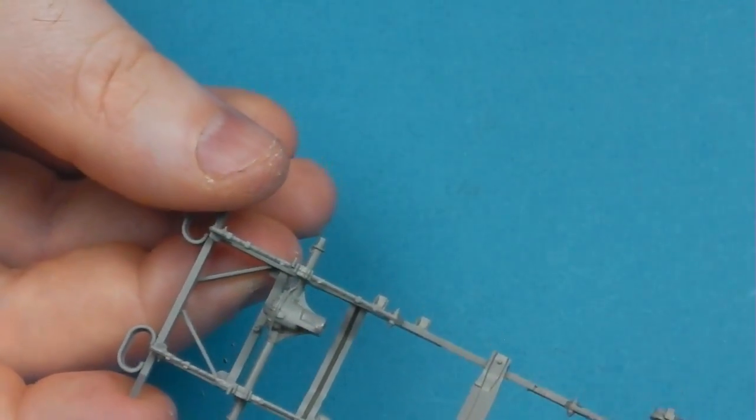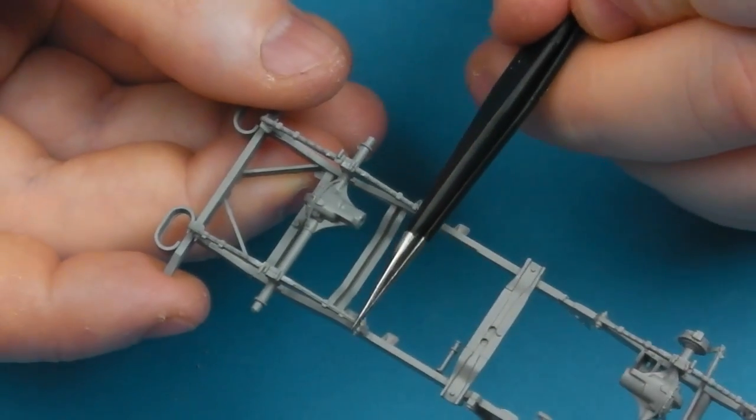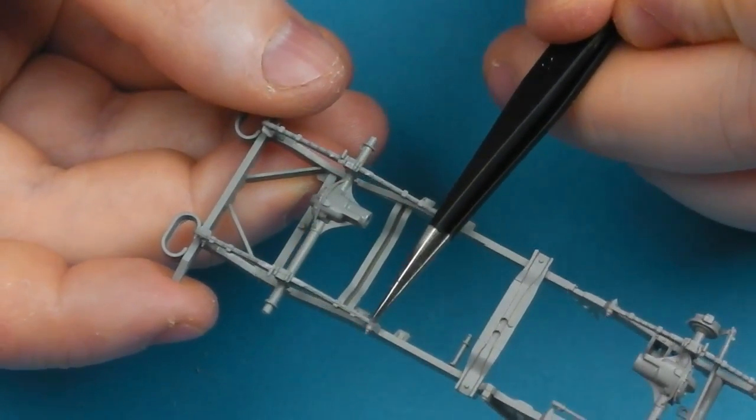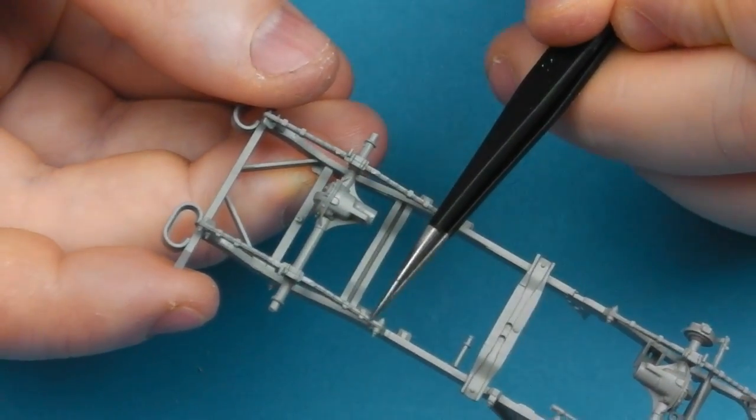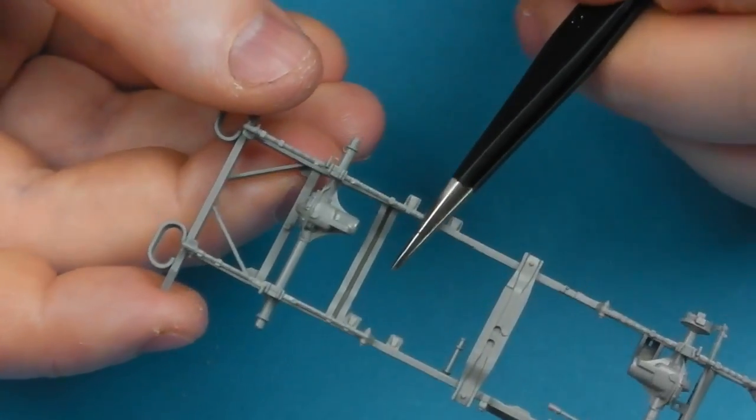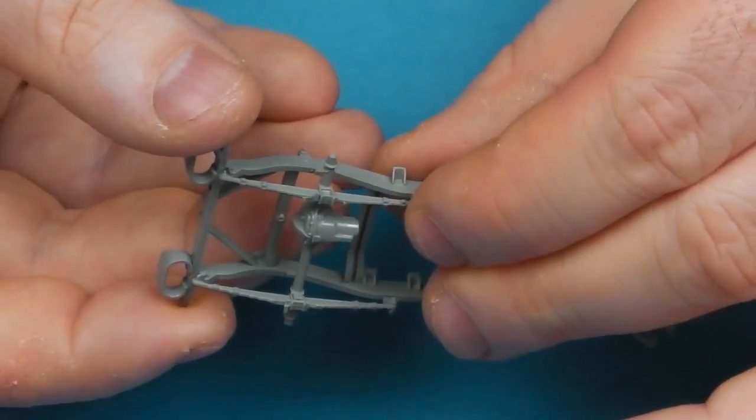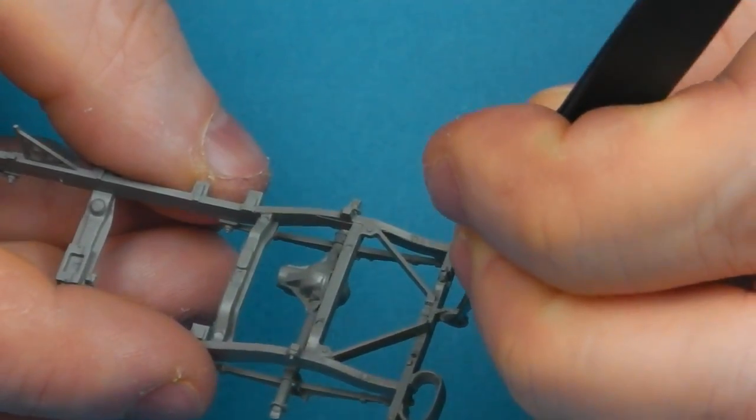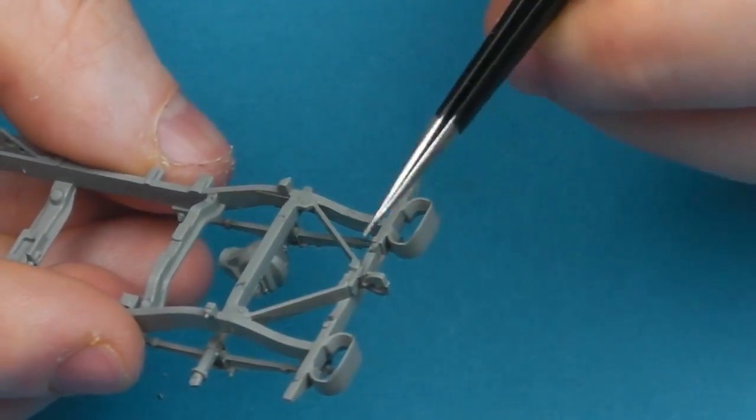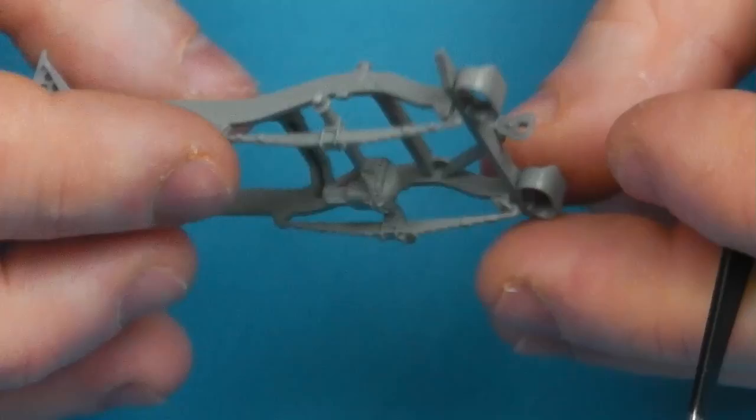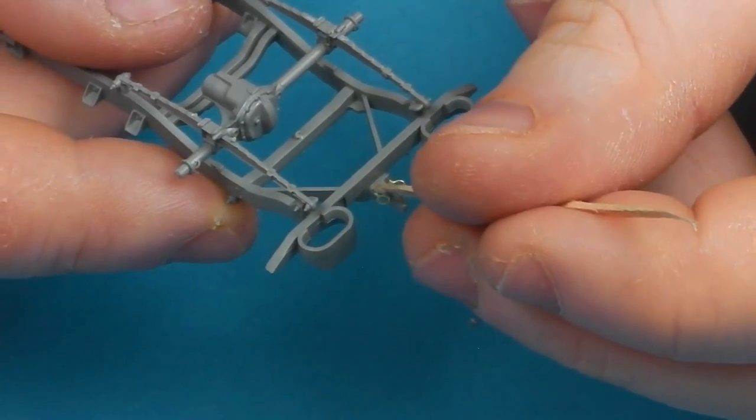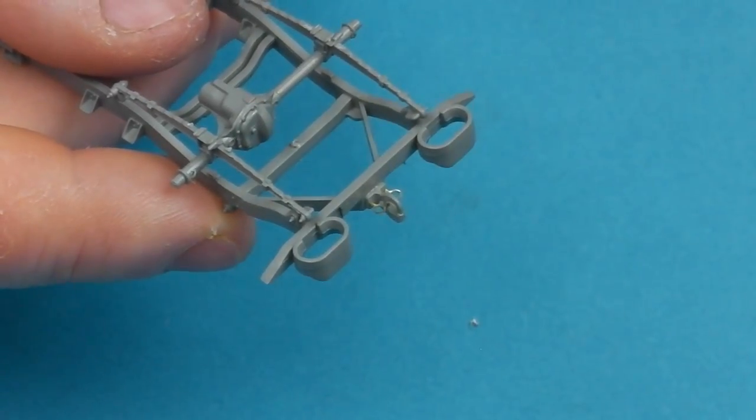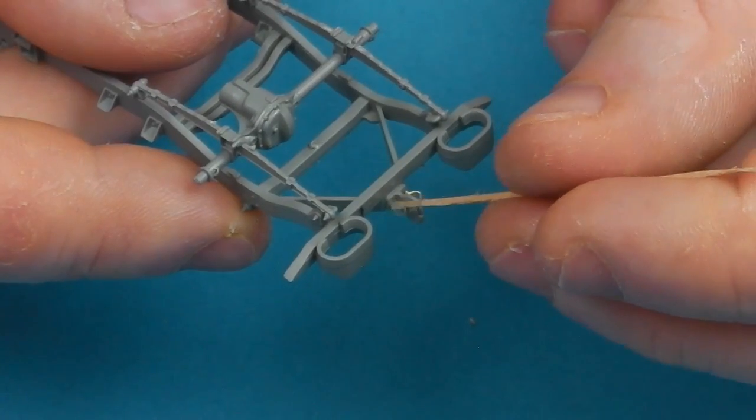So now we have the two axle assemblies mounted onto the chassis. Another thing is that the steering is actually fixed so you can't model this workable unfortunately. Also some very nice little photo etch pins here for the tow hitch and this fixing in place with a little bit of liquid CA.